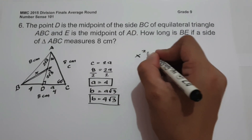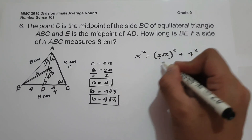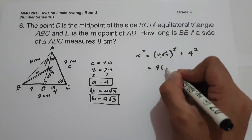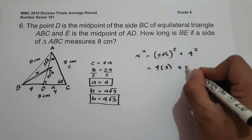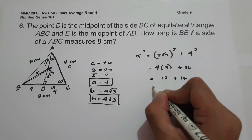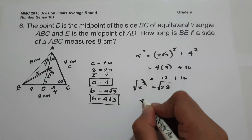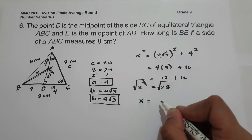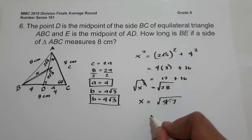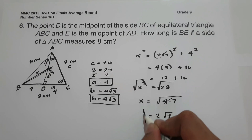Using the Pythagorean theorem to find BE: x squared equals (2 square root of 3) squared plus 4 squared. Simplifying: 2 squared is 4, canceling the radical gives 4 times 3, plus 4 squared which is 16. So 4 times 3 is 12, plus 16 equals 28. Taking the square root of both sides: x equals square root of 28. The factors of 28 are 4 times 7, where 4 is a perfect square. So the square root of 4 is 2, giving us x equals 2 square root of 7 centimeters. This will be our answer.